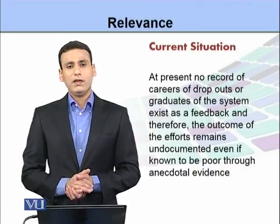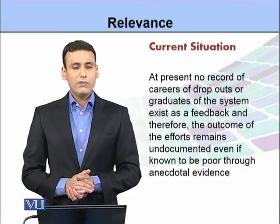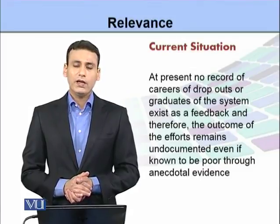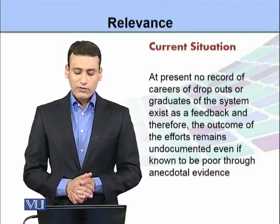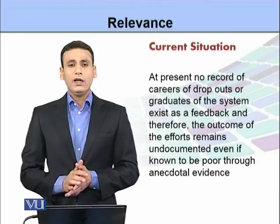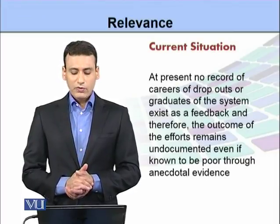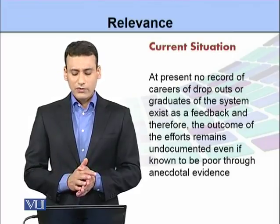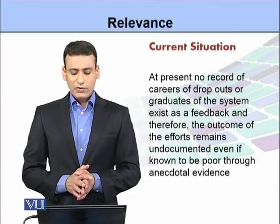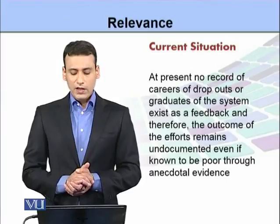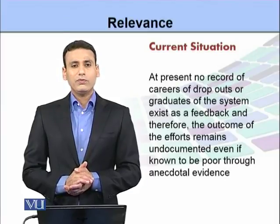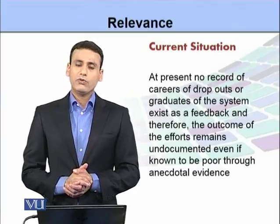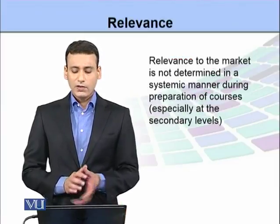Current situation میں ہم یہ دیکھتے ہیں کہ ہمارے پاس ایسا کوئی record موجود نہیں ہے جو یہ دیکھے کہ dropouts — وہ بچے جو school چھوڑ جاتے ہیں — کیسے graduates ہیں اور پھر اس کا system کے اوپر کیا اثر ہے۔ ایسی کوئی feedback ہمارے پاس نہیں ہے۔ تمام outcomes کی efforts بالکل undocumented اور کمزور ہیں — even اگر کوئی evidence موجود بھی ہے تو اس کو document نہیں کیا گیا کہ اس کے اثرات کیا ہیں۔